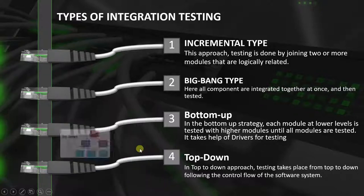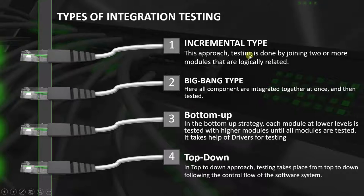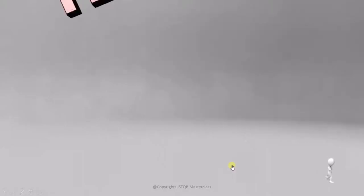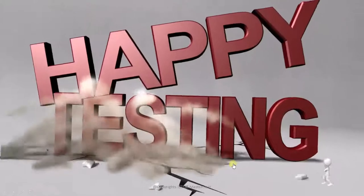So these were the 4 types of integration testing: incremental type, big bang type, bottom-up, and top-down. In incremental type, we are testing 2 or more modules at a time. In big bang type, we are integrating the whole software before testing. But big bang also has 2 approaches — the bottom-up and the top-down. Once the system is completed, we can choose one of the two to test the whole software. And that is all from this video. See you in the next one. Happy testing!